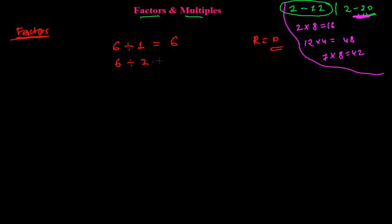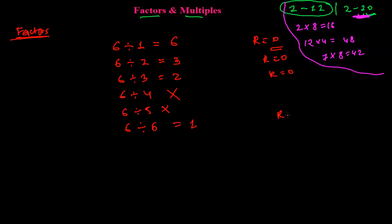If I divide 6 by 2, the remainder will be 0 and the quotient will be 3, because 2 times 3 is 6. If you divide 6 by 3, you get 2, and the remainder is again 0. If I divide 6 by 4, I can't divide it exactly. Similarly, 6 divided by 5 can't be done exactly. But 6 divided by 6 gives 1, and the remainder is again 0.